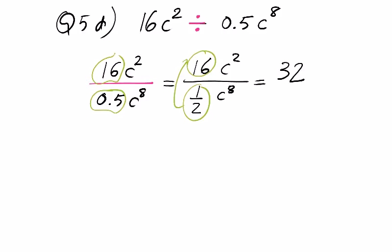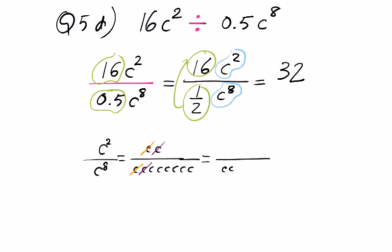Now we look at the letters. We have c squared on the top, c to the power of 8 on the bottom. We've done this before, c squared is c times c. c to the power of 8 would be c times itself 8 times. So what happens here? We can cancel one c on the top, one on the bottom, and another c on the top, and another one on the bottom. We end up with c multiplying itself 6 times on the bottom. But on the top, we cannot forget, we should have a 1.